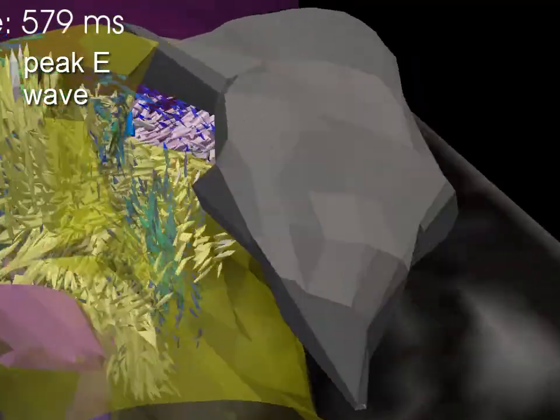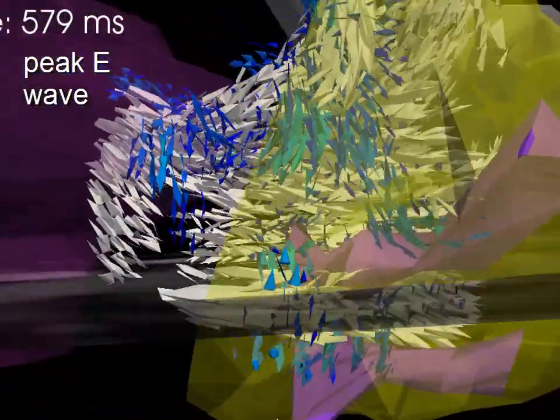At peak diastole, some recirculation behind the septal wall leaflet can be seen.